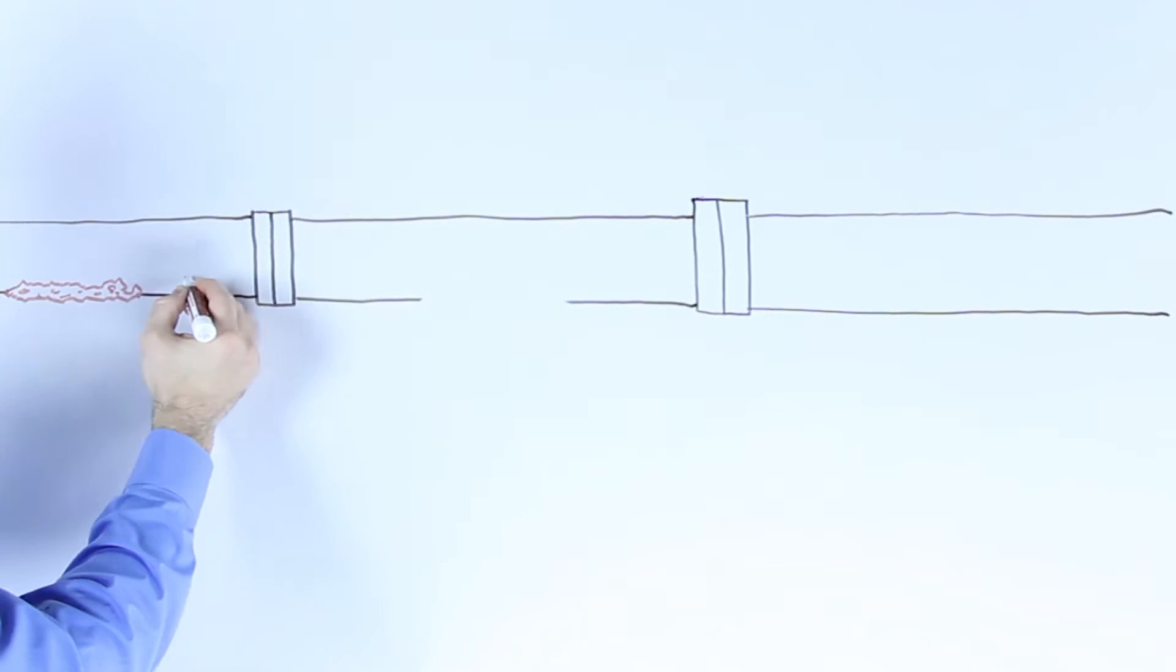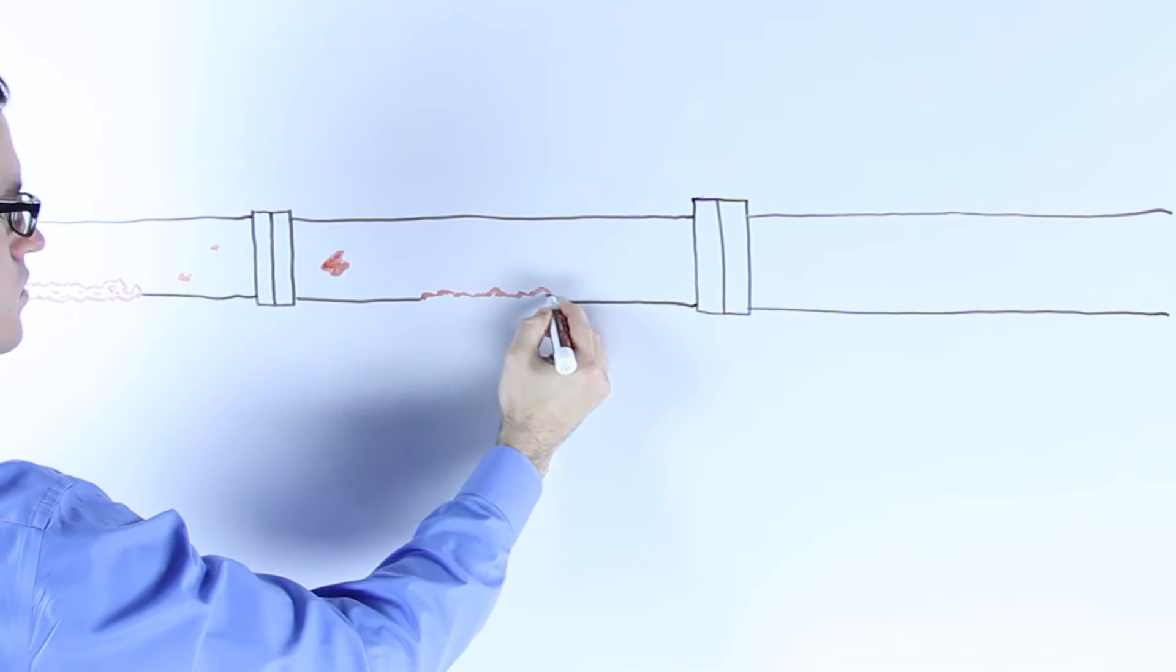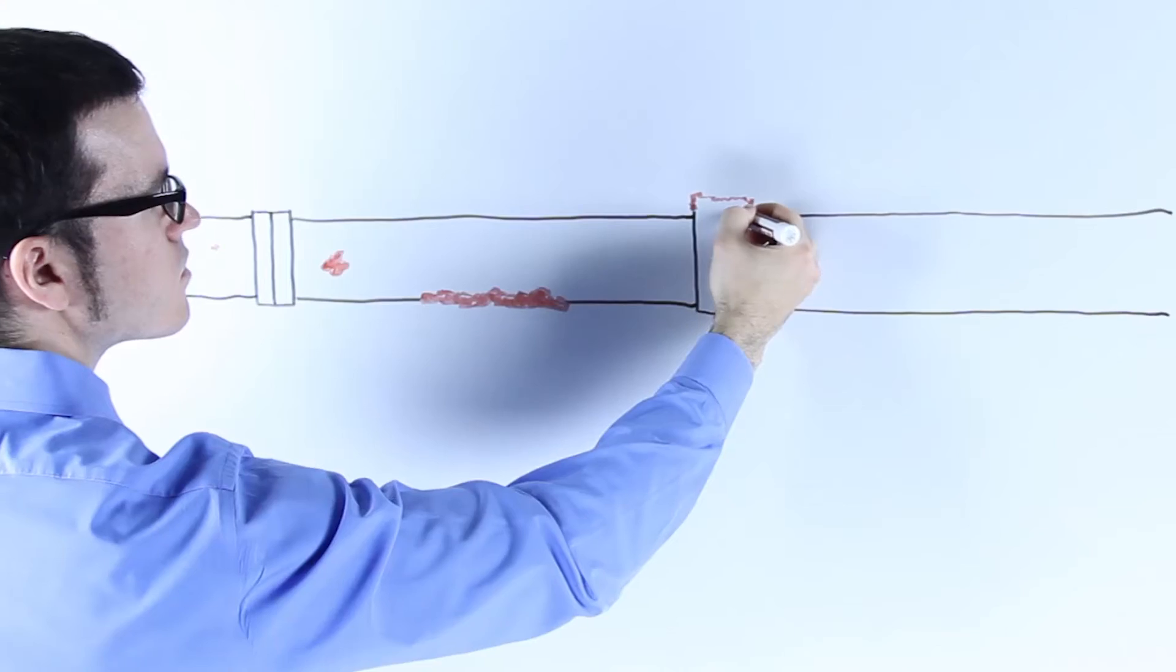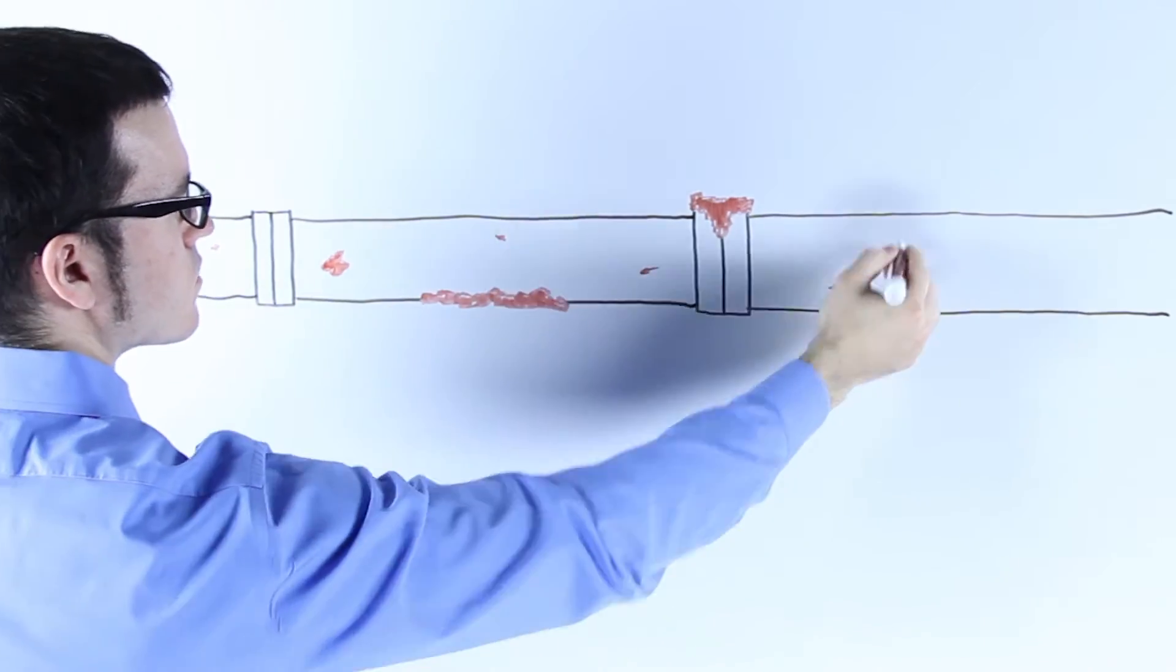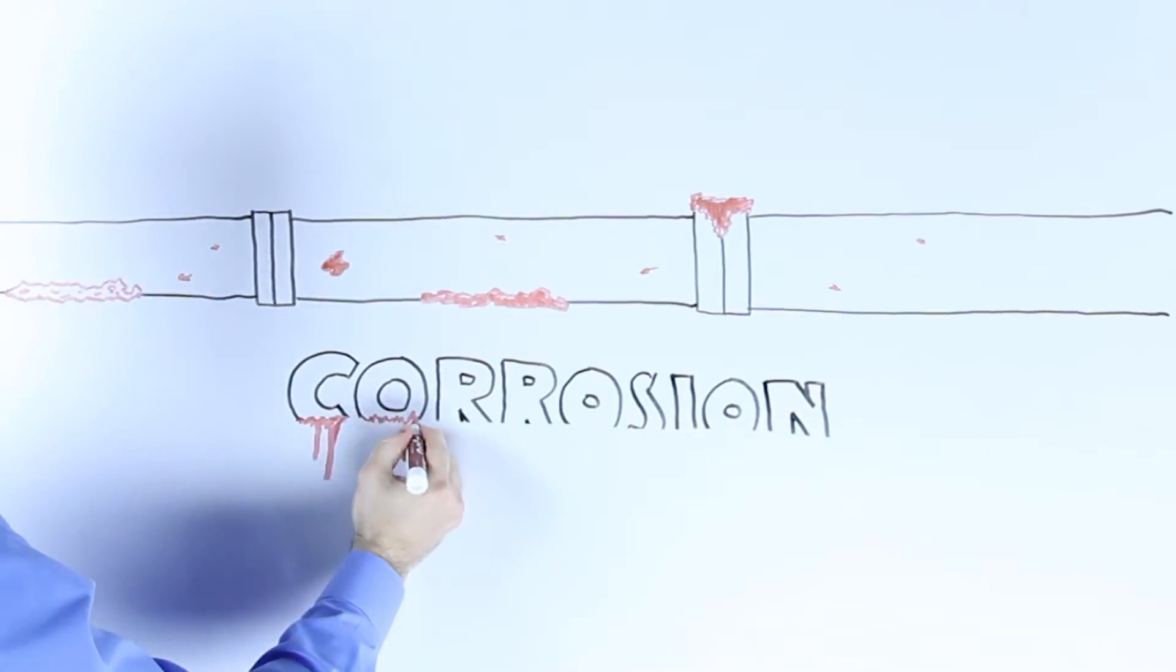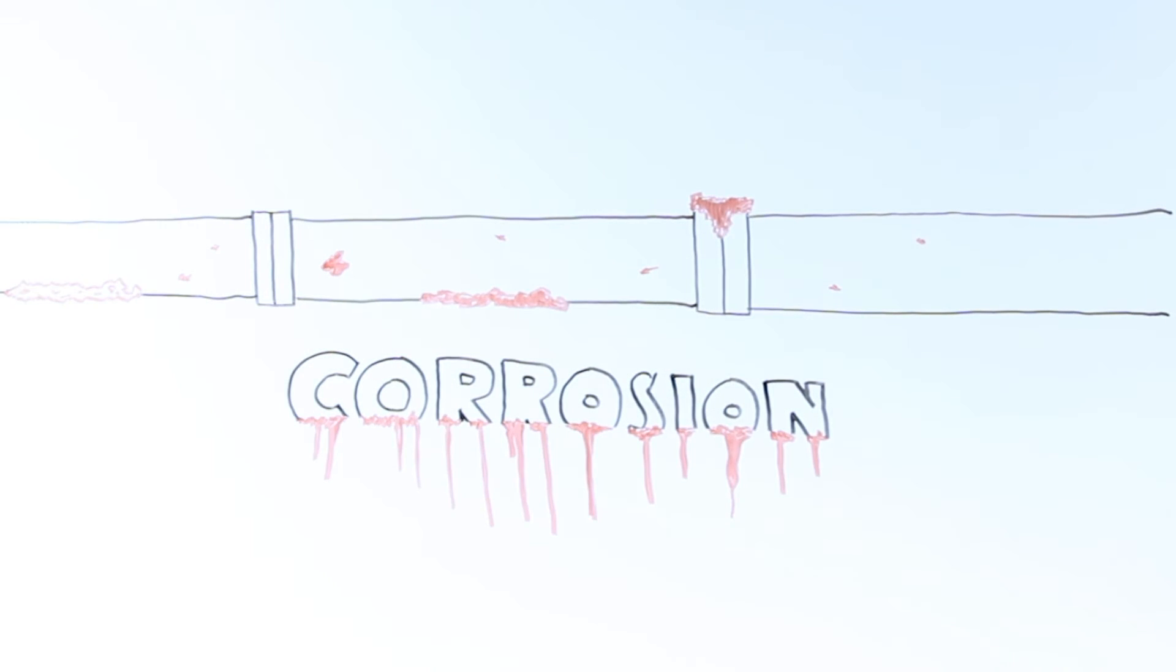We use a special coating on all of our pipes that protects them from 95-98% of the corrosion. But 95-98% isn't enough. To make sure that our pipelines are 100% safe from corrosion, we employ a special technique called cathodic protection.